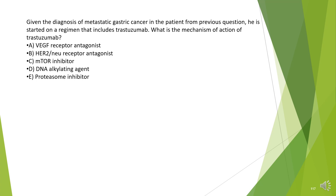Given the diagnosis of metastatic gastric cancer in the patient from the previous question, he is started on a regimen that includes trastuzumab. What is the mechanism of action of trastuzumab? A. VEGF receptor antagonist. B. HER2/neu receptor antagonist. C. mTOR inhibitor. D. DNA alkylating agent. E. Proteasome inhibitor.